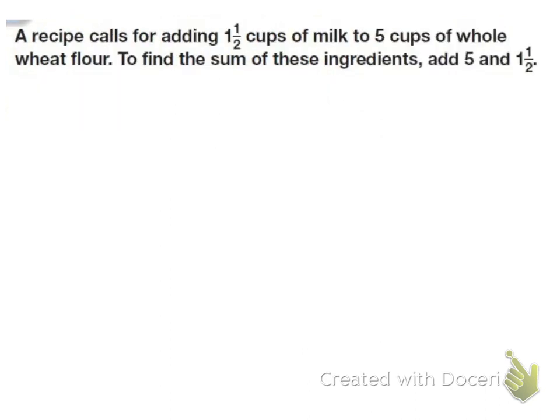Now we've studied whole numbers, fractions, and mixed numbers. And when we add these numbers, we add the whole numbers to whole numbers and fractions to fractions. And we do the same thing with subtraction. So this says a recipe calls for 1 and 1 half cups of milk to 5 cups of whole wheat flour. To find the sum of these ingredients, add 5 and 1 and 1 half. So we do 5 plus 1 and 1 half.